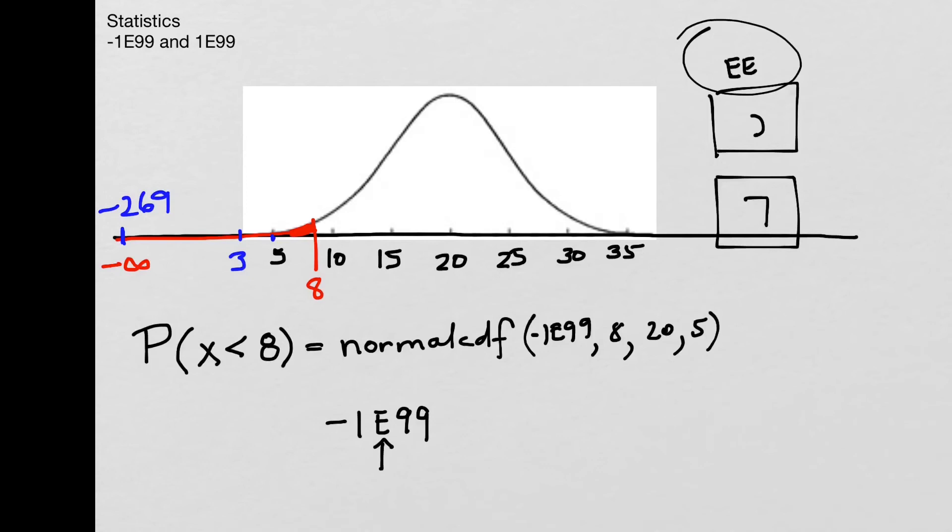So they get this E by pressing alpha and the sin button. And I like to say, it's a sin to do that. Don't do it.